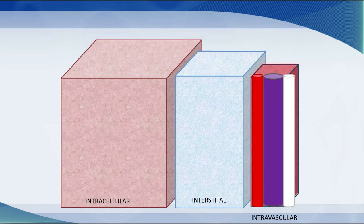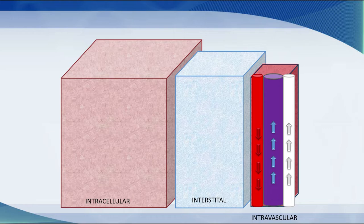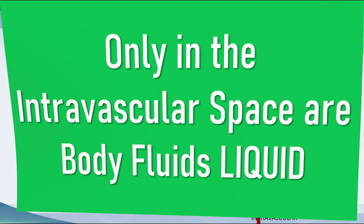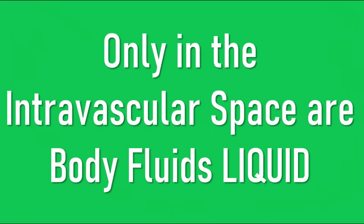To draw this all together, we have a large intracellular space, an interstitial space, and then an intravascular space — made up of arteries, veins where most of the fluid is, and lymphatics. And here's the thing: it is only in that intravascular space that body fluids are liquid.